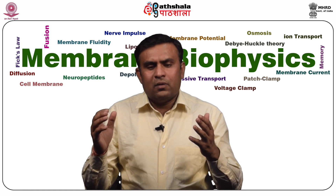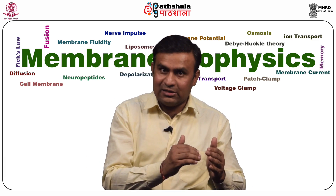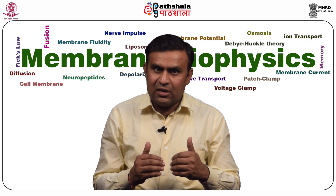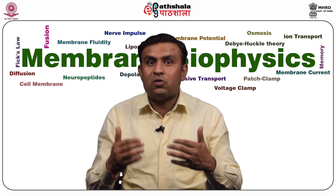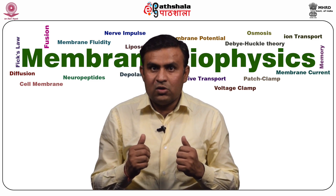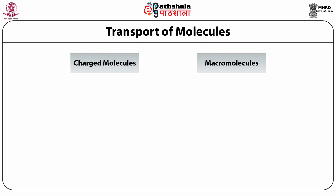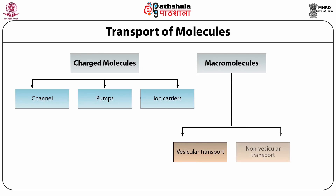In vesicular transport, macromolecules which are intended to be internalized by the cell from the extracellular environment are dependent on vesicular transport. This type of transport is very important for maintaining the intracellular environment as macromolecules cannot freely diffuse and pass the membrane. Transport molecules are classified as charged molecules and macromolecules. Charged molecules are generally transported through channels, pumps and ion carriers, while macromolecules undergo transportation through vesicular or non-vesicular transport.